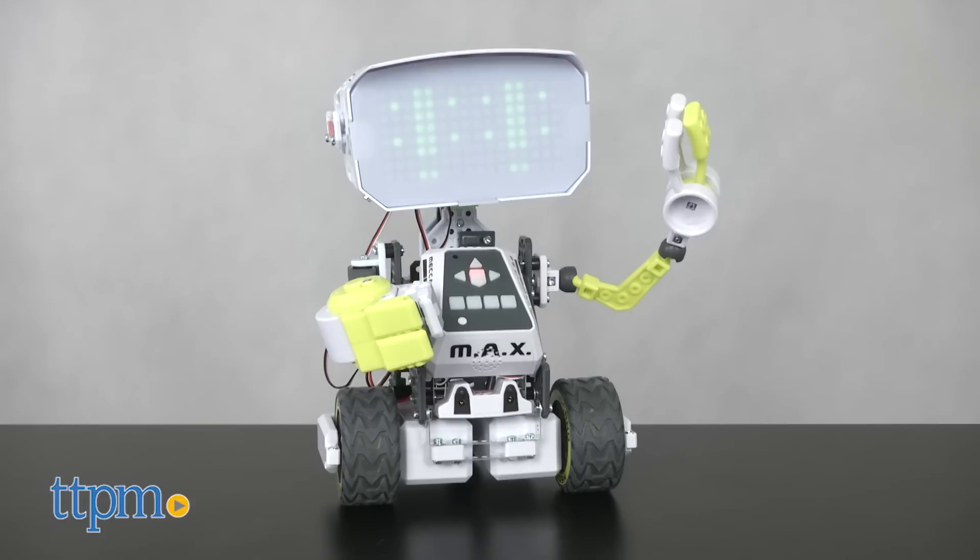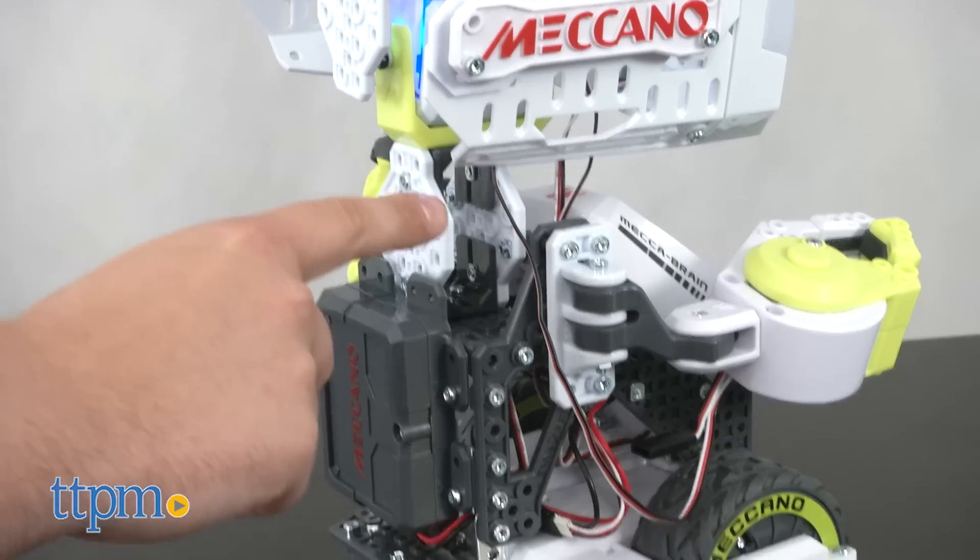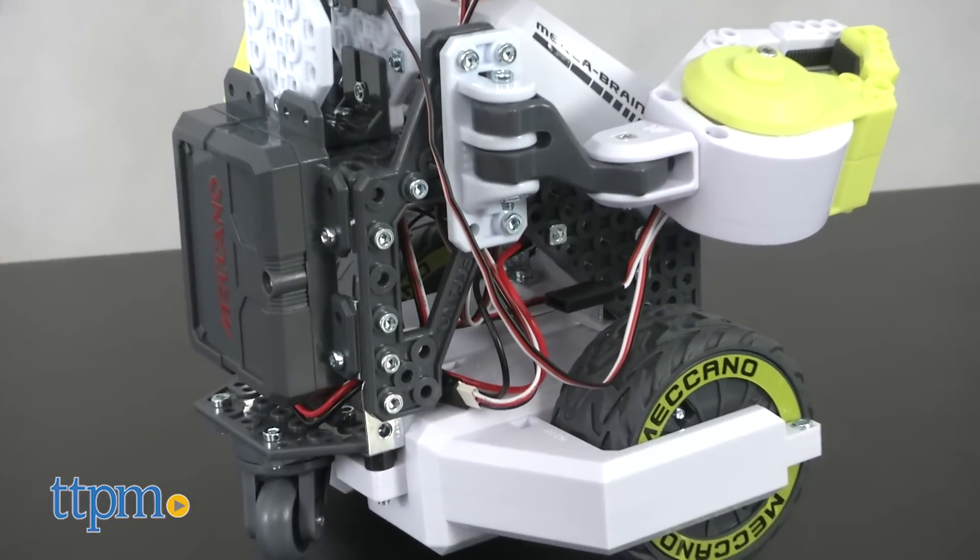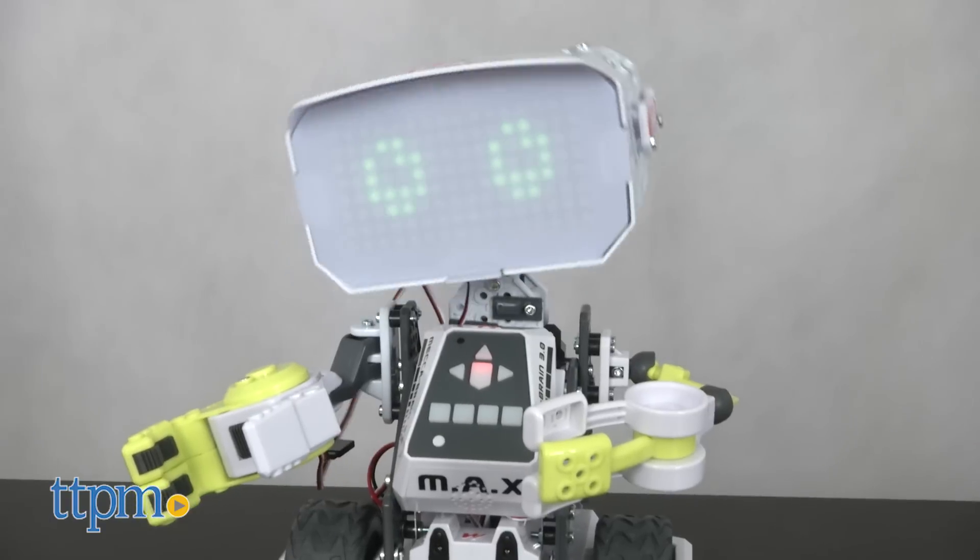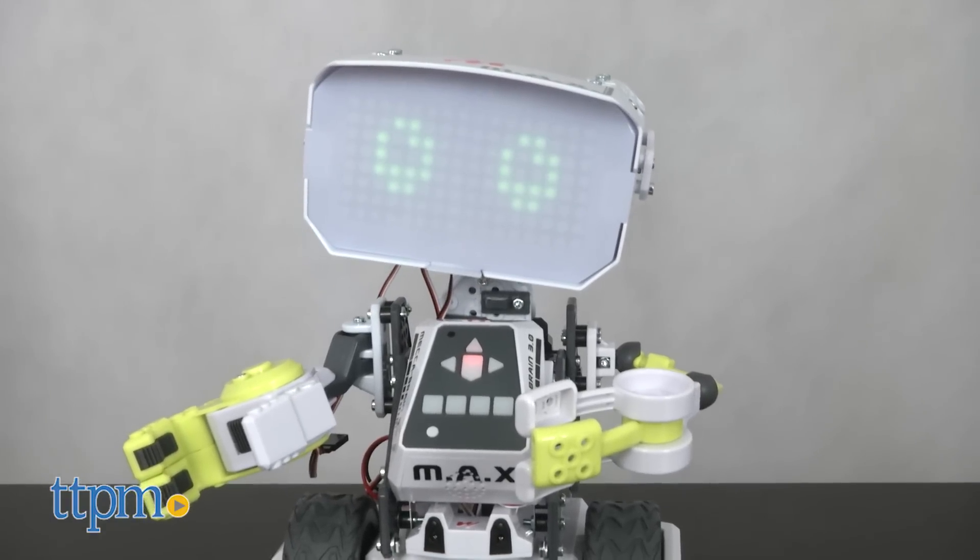Once built, Max measures 12 inches tall. The initial setup involves charging it for four to six hours, installing software, and then waking Max up and walking through a series of questions and hardware testing with Max.